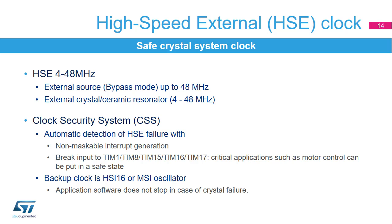The high-speed external oscillator provides a safe crystal system clock. The HSE supports a 4 to 48 MHz external crystal or ceramic resonator and also an external source in bypass mode. A clock security system allows automatic detection of an HSE failure. In this case, a non-maskable interrupt is generated and a brake input can be sent to timers in order to put critical applications, such as motor control, in a safe state. When an HSE failure is detected, the system clock is automatically switched to an internal oscillator, either HSI16 or MSI, so the application software does not stop in case of a crystal failure.